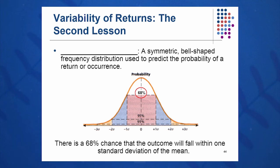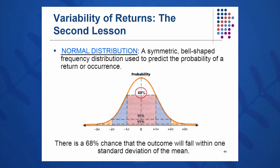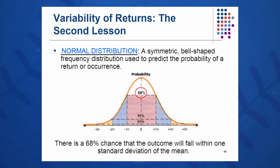If the frequency distribution does take on a normal distribution form — which it will start to look more and more normal as you add more data points — we can make some assumptions. Once we have the average and the standard deviation, we know that plus or minus one standard deviation from the mean, about 68% — roughly two-thirds — of all future returns will fall within that range, assuming a fairly normal distribution.